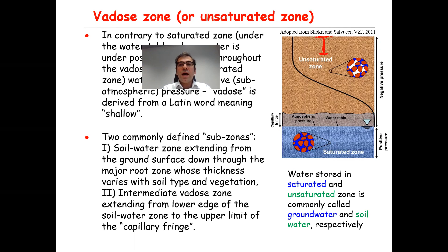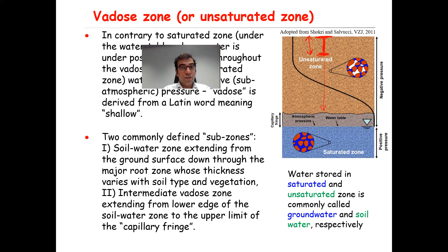The soil water zone starts from the surface down to the bottom of the root zone. Another sub-zone commonly defined in some textbooks is called the intermediate water zone, which extends from the lower edge of the soil water zone down to the upper limit of the capillary fringe. So you have two sub-zones: the soil water zone and the intermediate water zone.